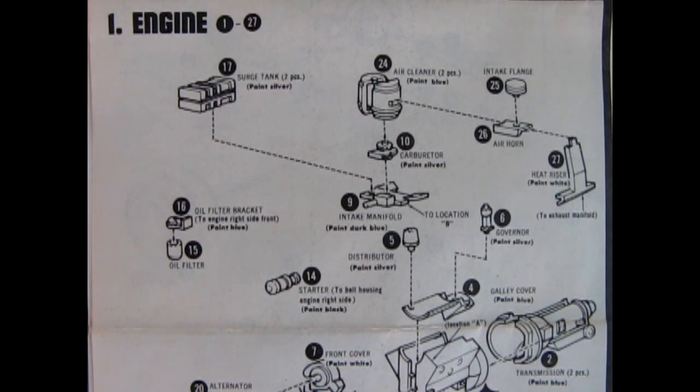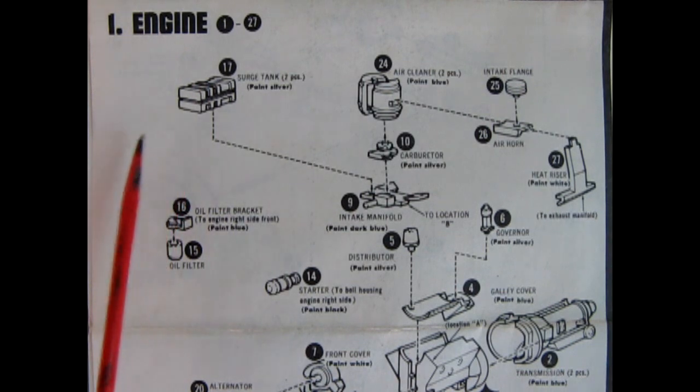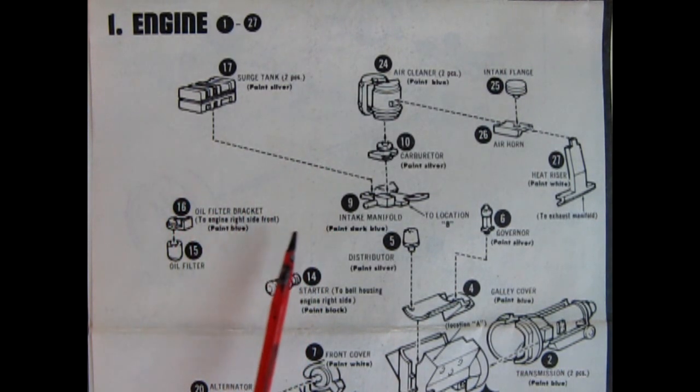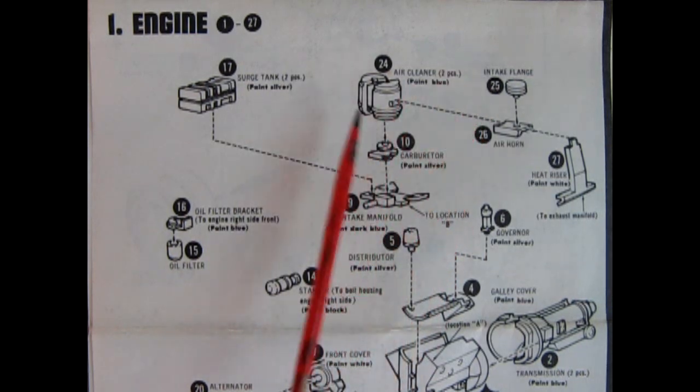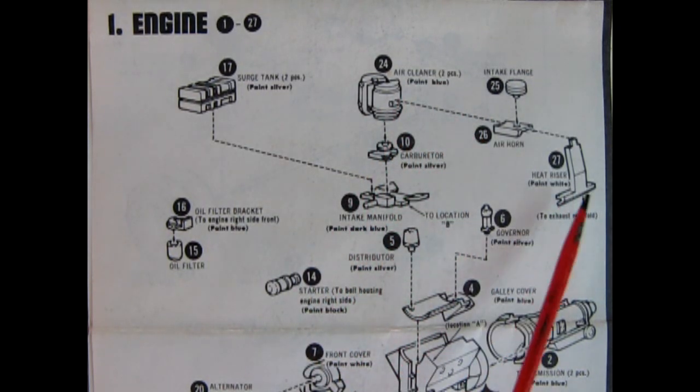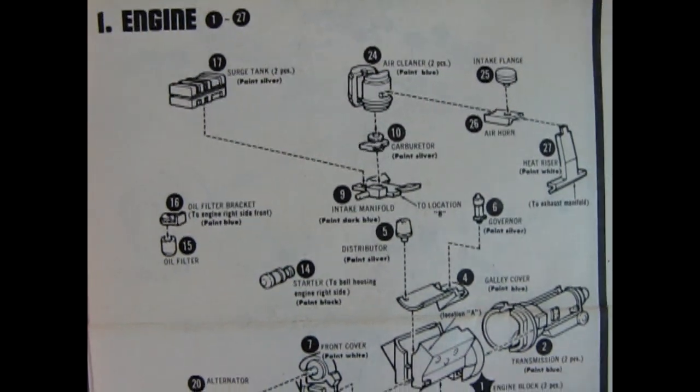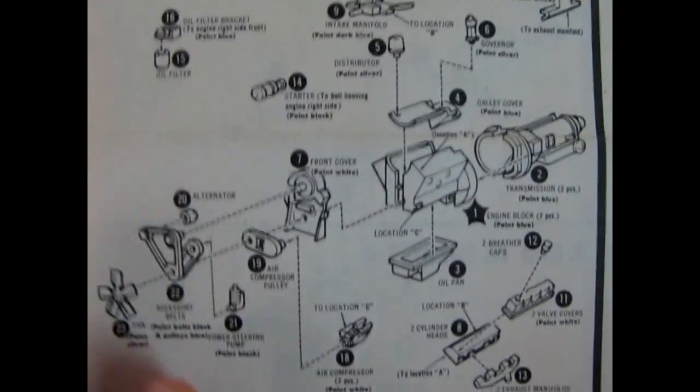First up we have this excellent 36 piece engine assembly. So here is our surge tanks and those are two parts. We also have a two part air cleaner, a carburetor, the intake manifold, the intake flange, the air horn, the heat riser, the governor, our distributor, our starter motor. And then we have our oil filter bracket and the oil filter. So I'll just move this down a little bit and see the bottom part of the engine.